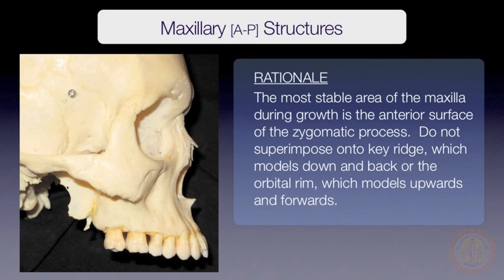When superimposing the maxilla, its anterior-posterior or AP position is determined by two sets of structures. Using small implants to superimpose upon, Bjork and Skeller showed that the most stable surface of the mid-face during growth is the zygomatic process. More specifically, the stable aspect of the process is located just above and anterior to key ridge.